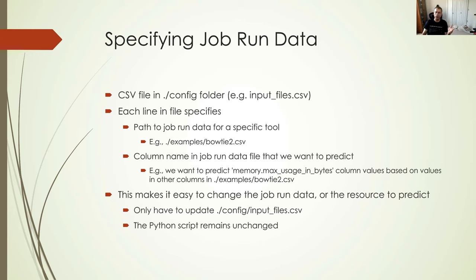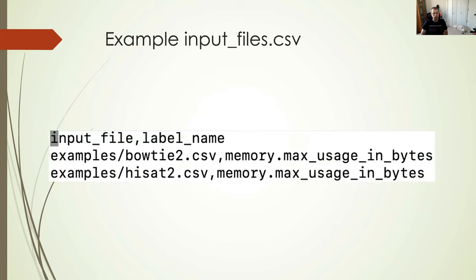This makes it easy to change the job run data or the resource to predict. You don't have to change the Python script. You just have to change the input file. If I want to train a model on 10 tools, I just have 10 input files. The script is unchanged. This is one example. This is a CSV file that has two columns: input file and label name. We have job run data for bowtie2 and hisat2. We have the path to the files that were created from the job run data on main. And we also specify which column we want to predict.